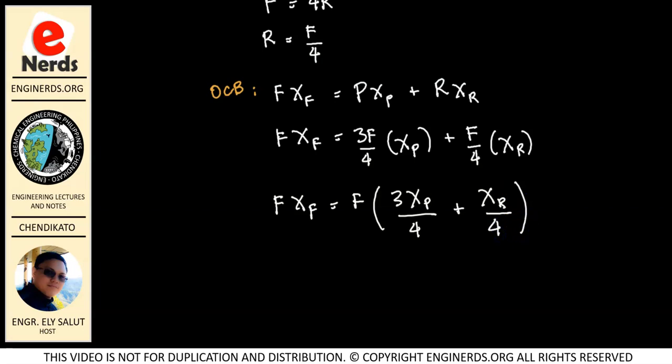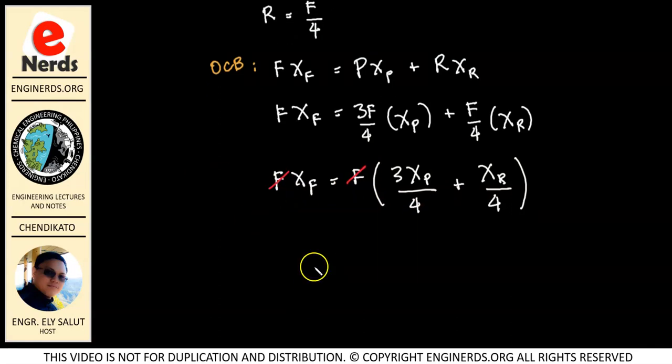Okay? Then multiply both sides by 4 to get a clearer equation. So I will have 4XF is equal to 3XP plus XR. Now we can substitute our dissolved solids in here.